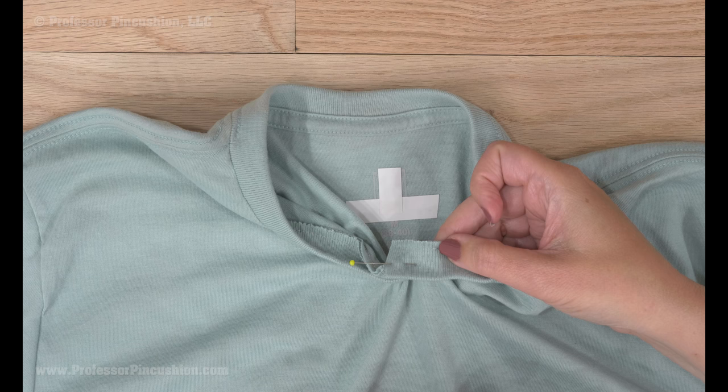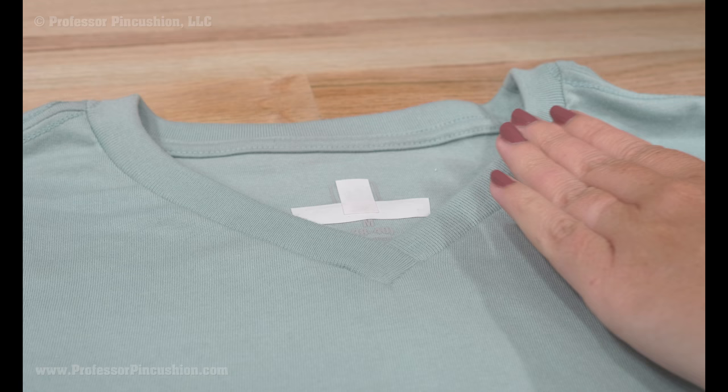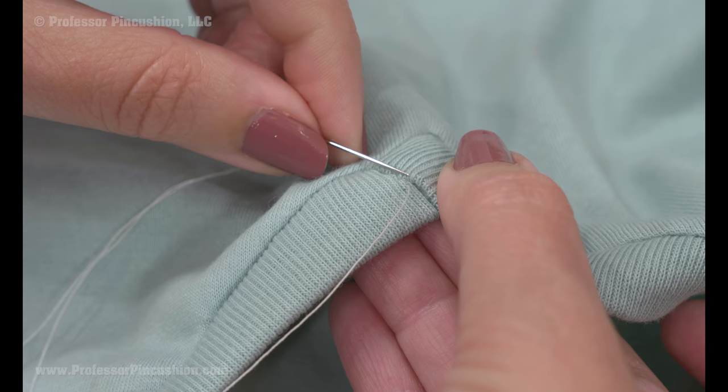If the t-shirt looks a little puckered or wrinkled, use steam from the iron to help press and shrink the area. If you want the center parts of the band more attached, you can do a hand slip stitch to connect them.